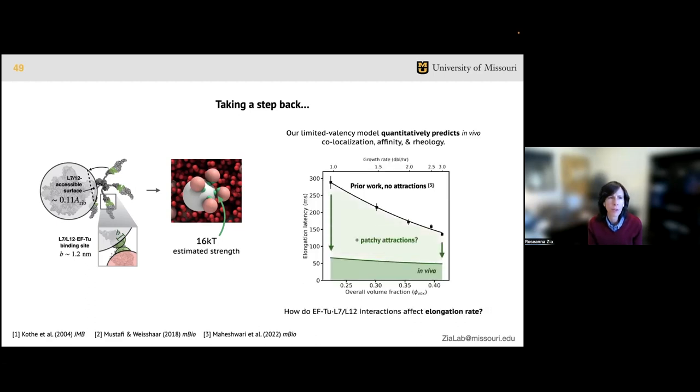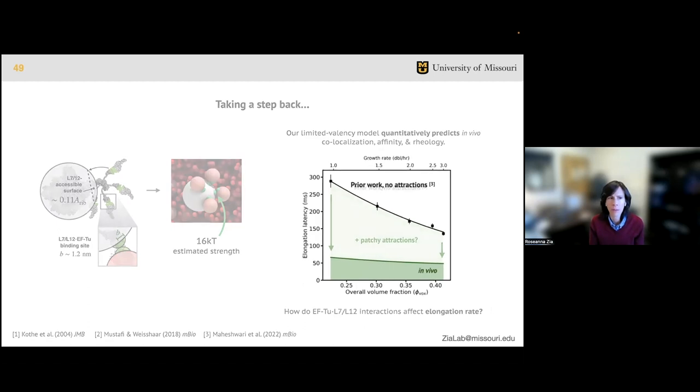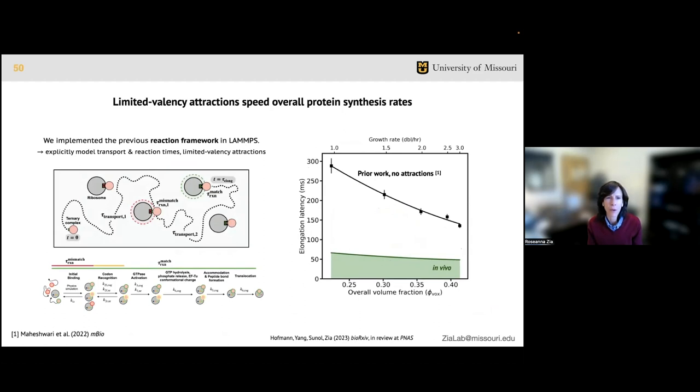We can also measure against in vivo binding affinity, measured to be about 20 micromolar at one doubling per hour. Once again, our limited valency model quantitatively recovers this value. Taking a step back, we've demonstrated that our model can quantitatively predict in vivo measurements of co-localization, affinity, and rheology. The question now is if these interactions close the gap in translation rates between our prior model without attractions and that value compared to experiments. To test this, we implemented a chemical reaction framework developed previously in LAMMPS. We again ran dynamic simulations where we explicitly track the transport and reaction times of translation molecules as they search for their match.